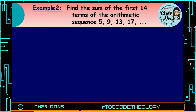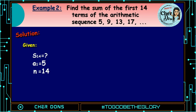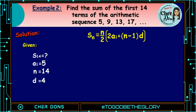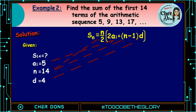Example number 2: Find the sum of the first 14 terms of the arithmetic sequence 5, 9, 13, 17, and so on. Given: S sub 14 is unknown, a sub 1 is 5, n is 14, d is 4. Applying the formula: S of n is equal to n over 2 multiplied by (2 times a sub 1 plus quantity n minus 1 multiplied by d). We use this formula because the nth term is not given. Where 5 goes to a sub 1, 14 goes to n, and 4 goes to d.